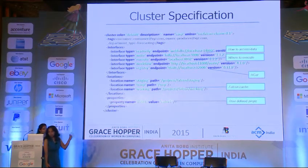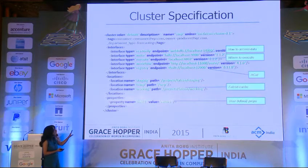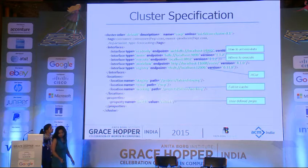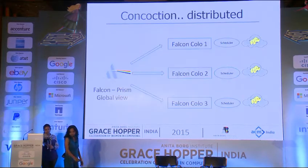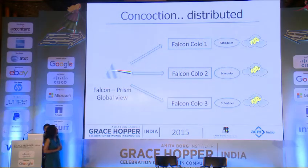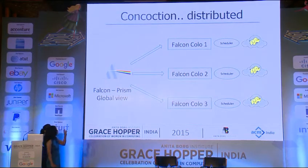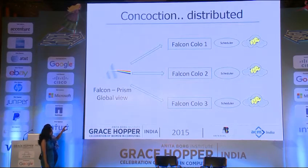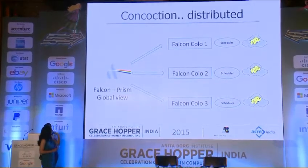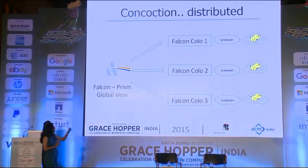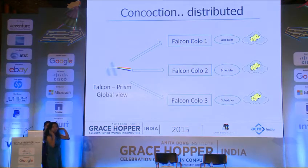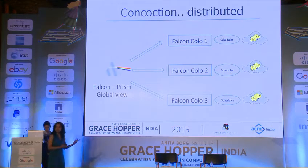If you have three or four clusters, you give all this information at once and say here are the different endpoints. And you're done — that is your cluster definition. We also have something called a distributed mode. In distributed mode you might have colo 1, colo 2, colo 3 — all individual clusters. Then we have something called Prism, which is like a single federator. You submit to Prism; it makes sure the entity goes and sits in all clusters. If you want the same process on colo 1 and 2, you give it to Prism and say schedule this on colo 1 and 2. Prism does the federation for you and makes sure all your entities go to the right set of clusters.